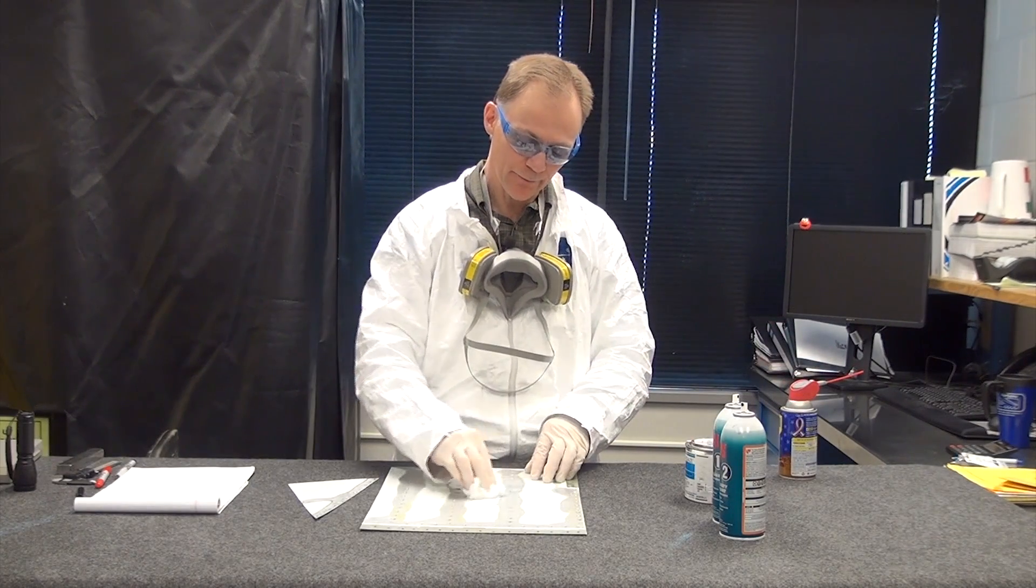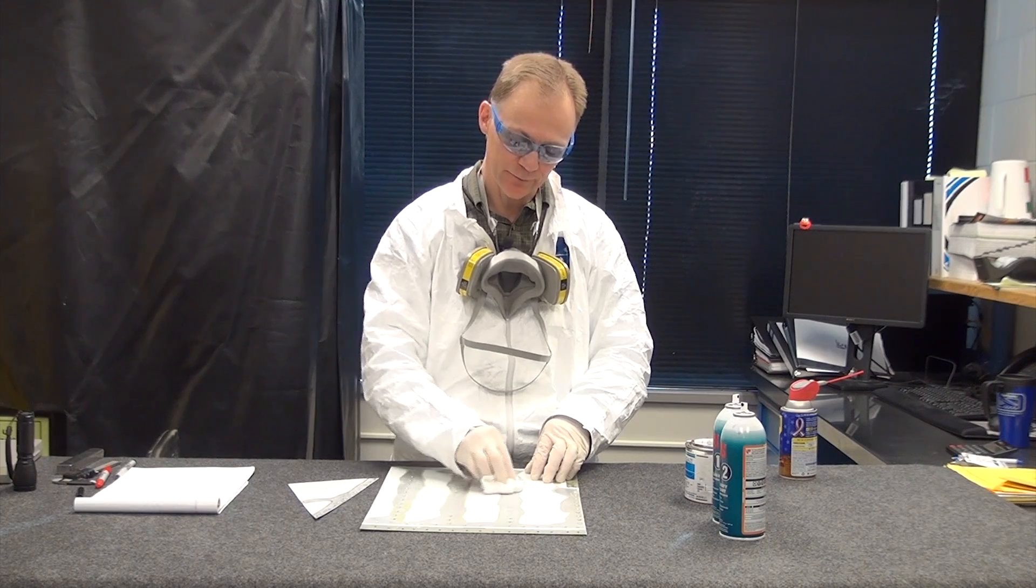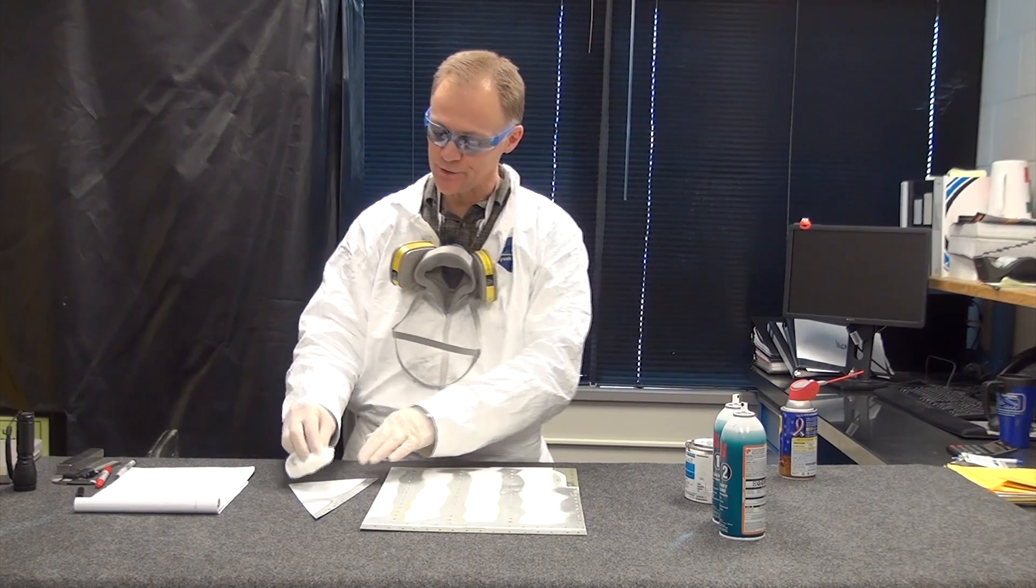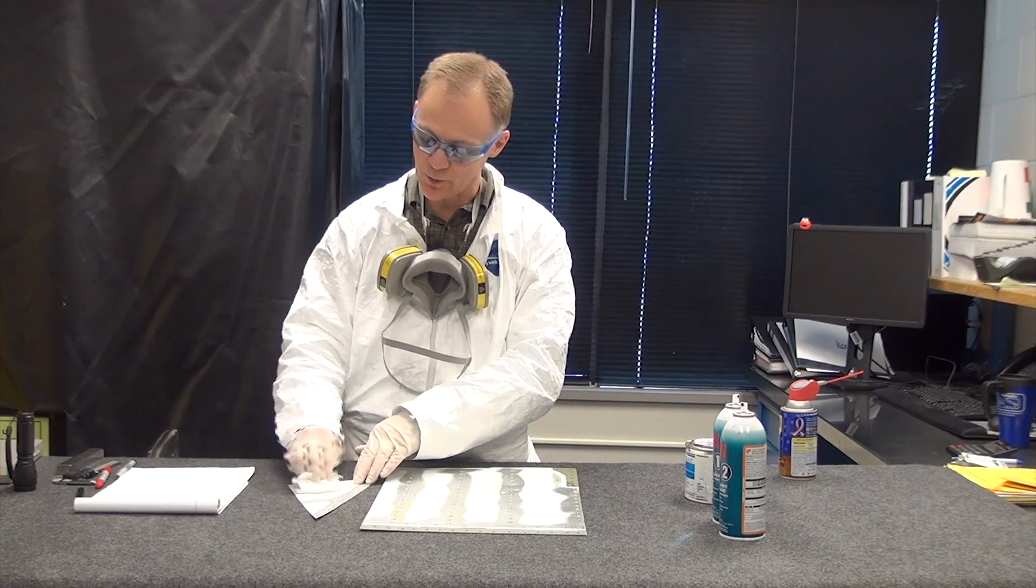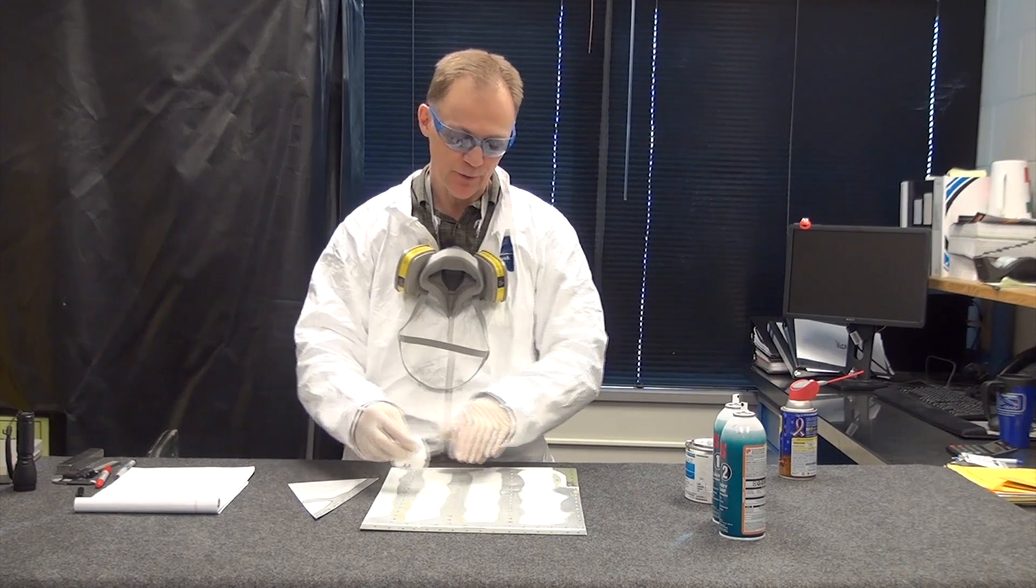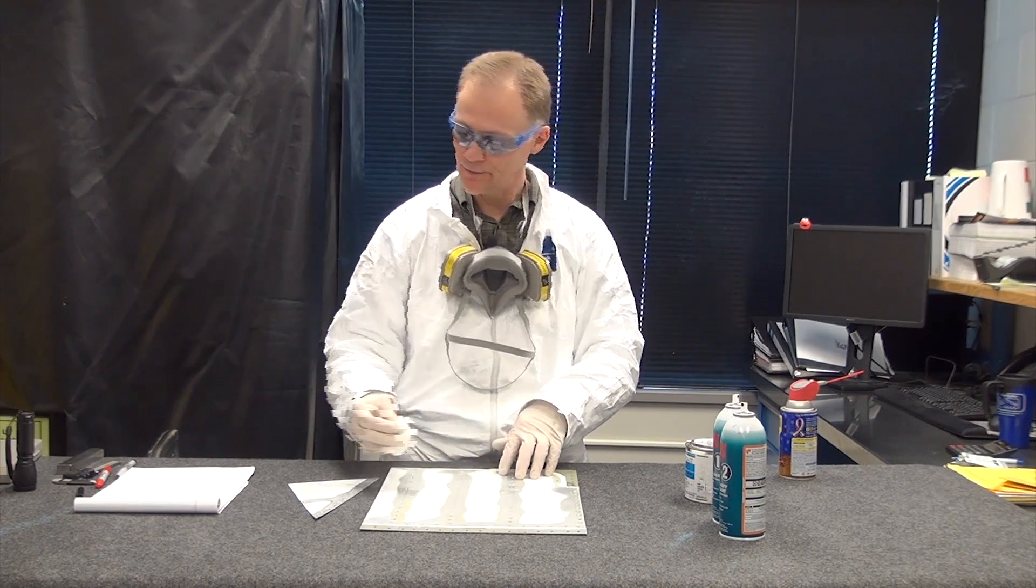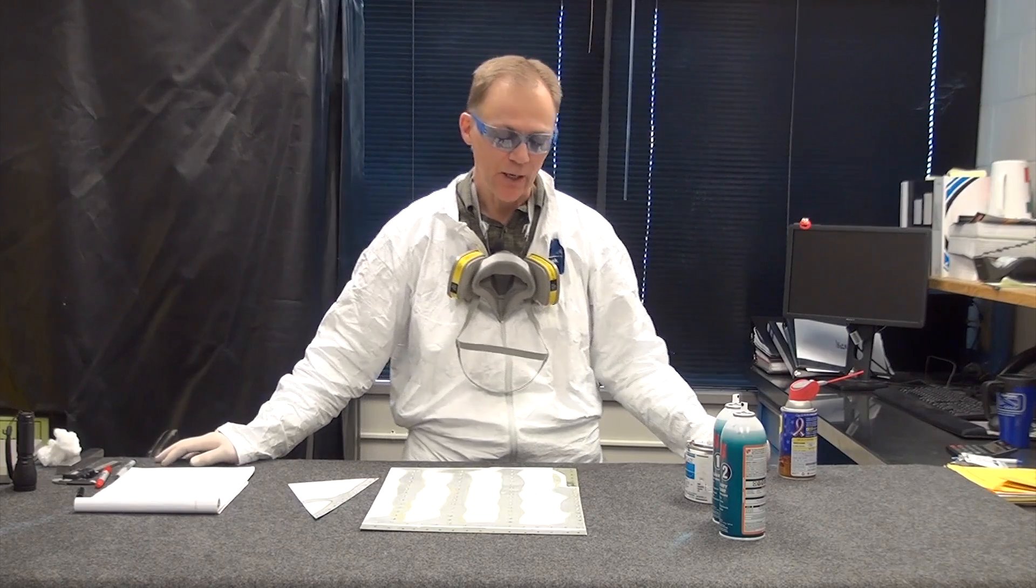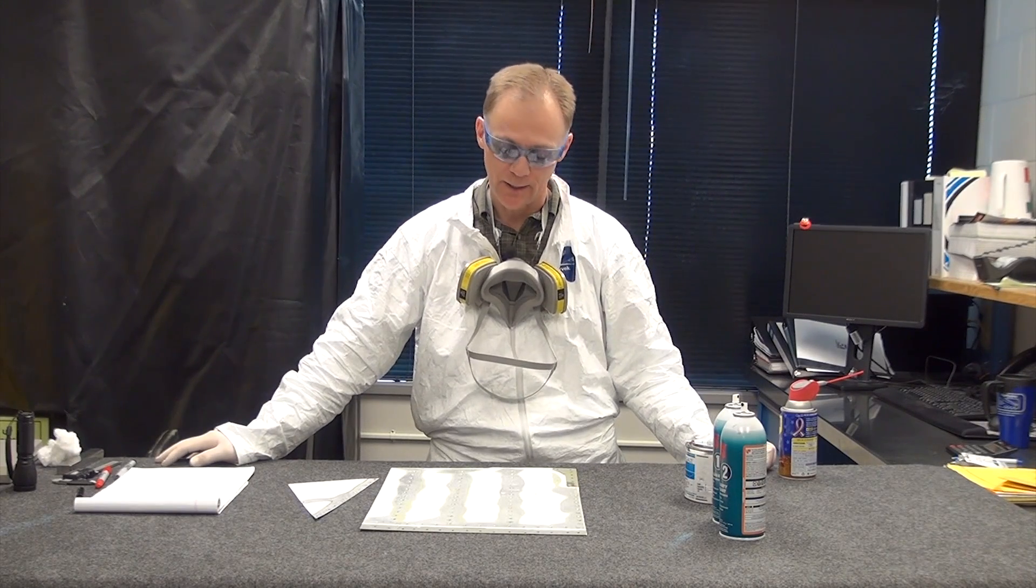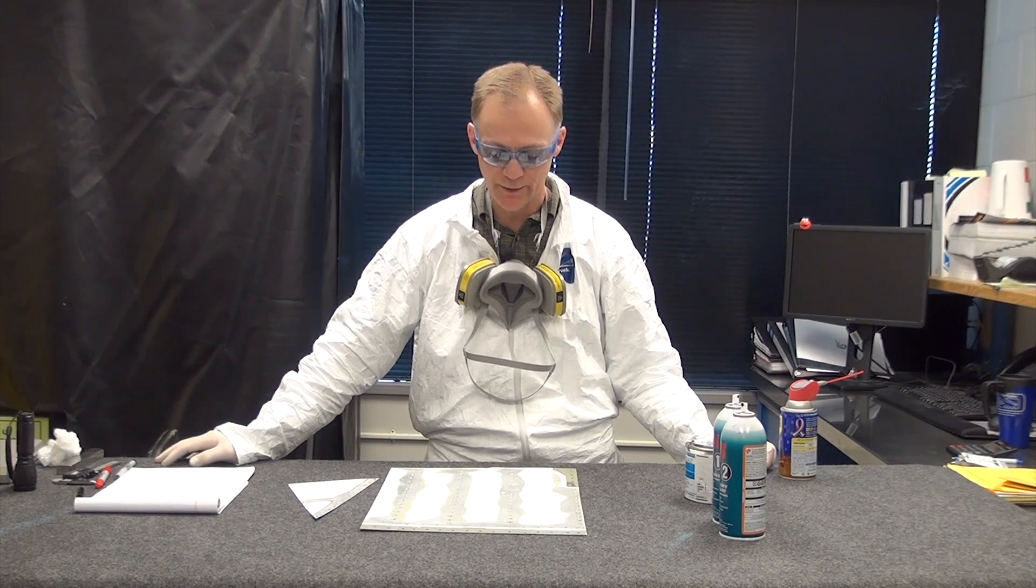And then we'll take a rag and wipe it off. Don't worry about wiping too much off because it creates such an oily film, any of these products will, that they will prevent the polyester resin from adhering to the structure that we're evaluating.